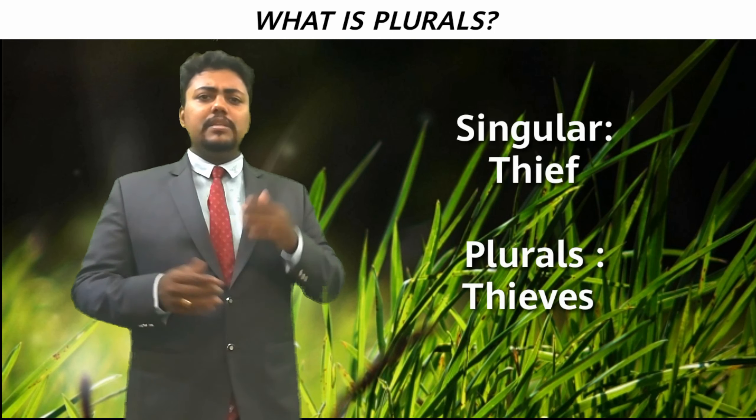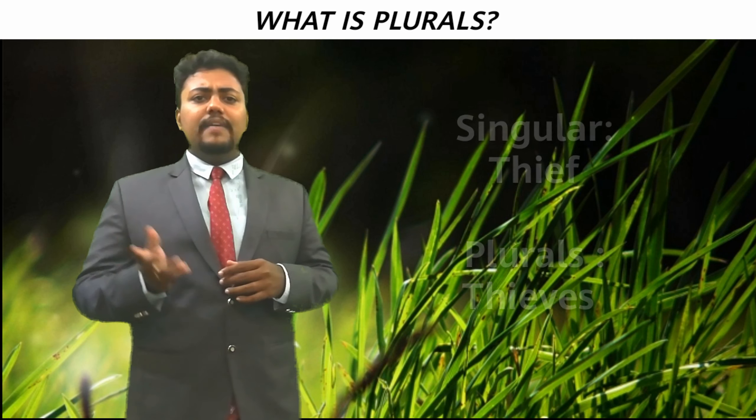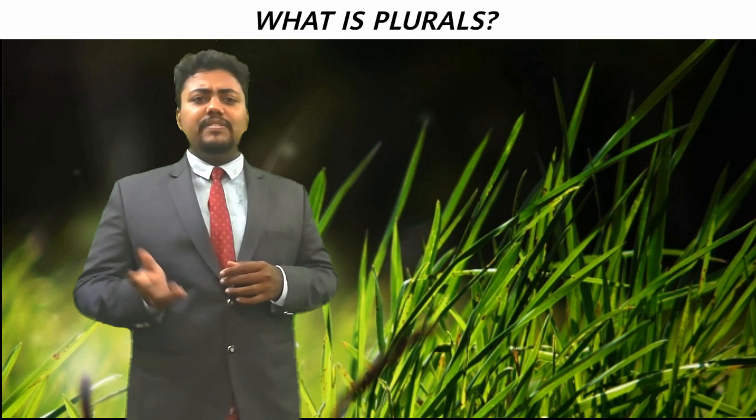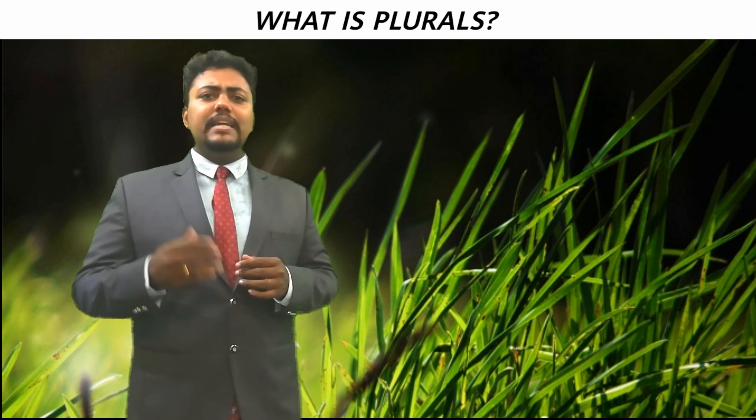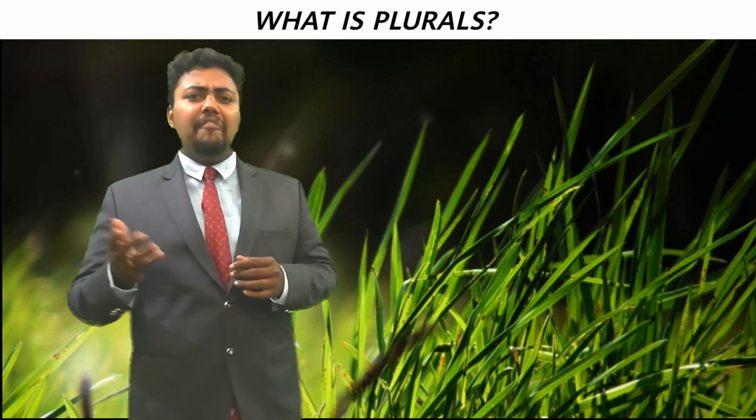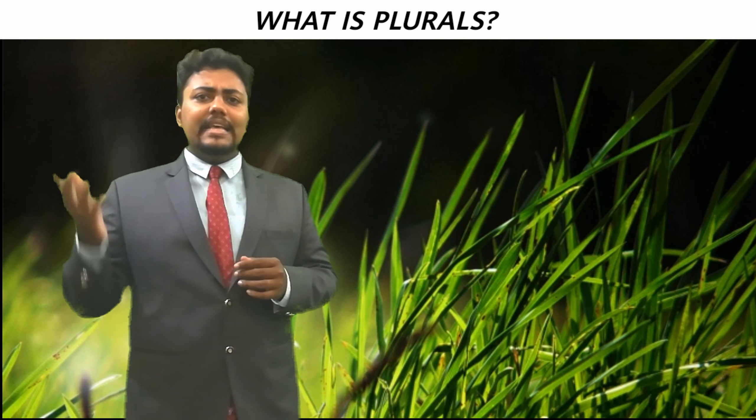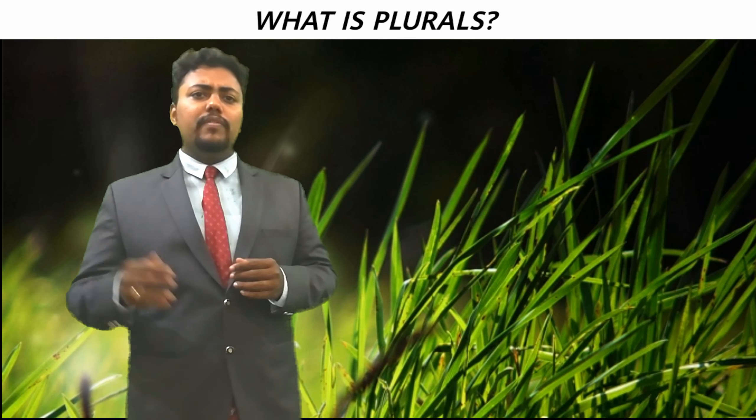Examples of words ending in 'f' where you replace the f with a v and add 'es': thief becomes thieves, loaf becomes loaves, half becomes halves, leaf becomes leaves.